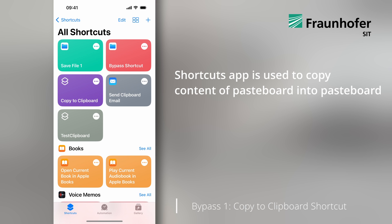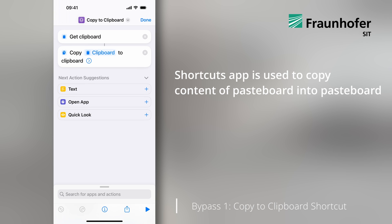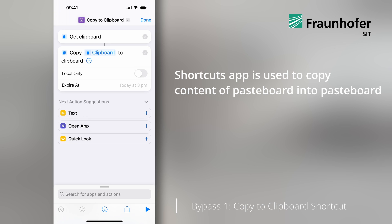But now, we invoke the simple shortcut named Copy to Clipboard in the iOS Shortcuts app. It contains the instructions to simply take the content of the clipboard and copies the content back to the clipboard.